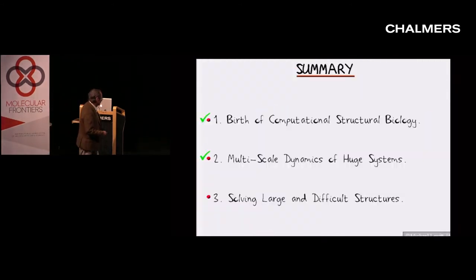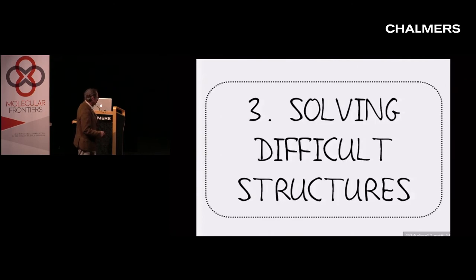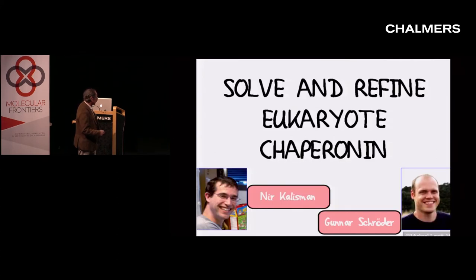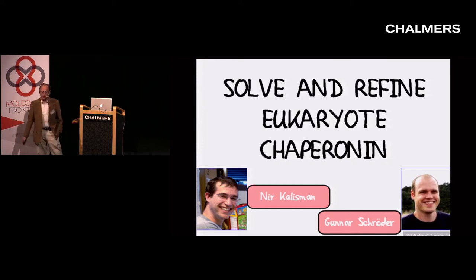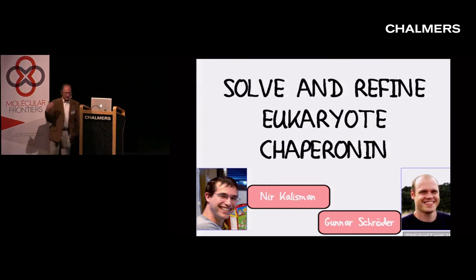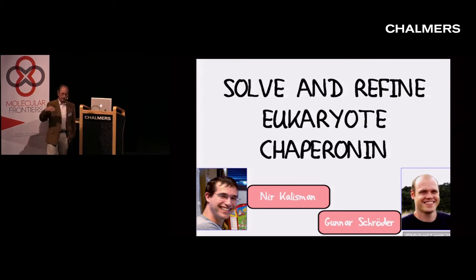So let me now move to solving large and difficult structures. The structure we're going to work on is the Eukaryotic Chaperonin. The work was done by ex-postdoc Nir Kalisman, who's now junior faculty at the Hebrew University in Jerusalem, and Gunnar Schröder, who left my lab about ten years ago and is now tenured in Jülich in Germany. We brought him back to help solve this problem.